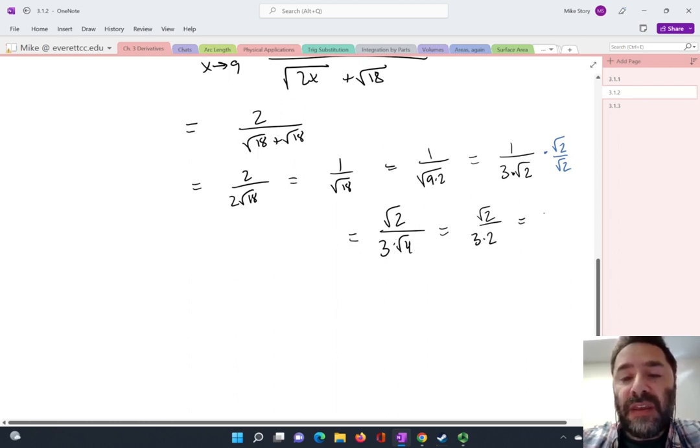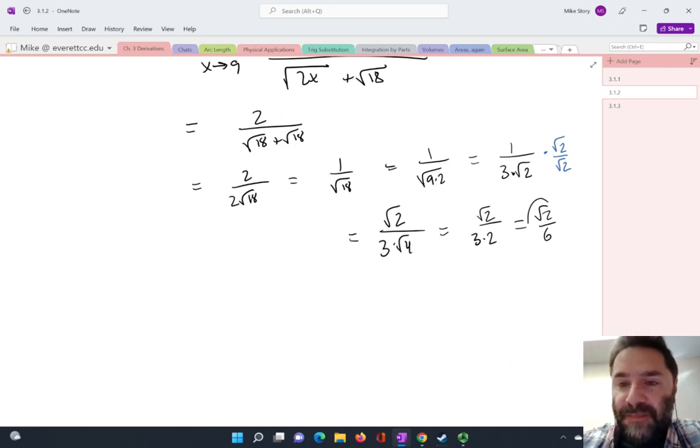And so you're going to end up with... Oh, wait. No, I'm done. I don't want to simplify that anymore. Oh, wait. Yes, I do. Square root of 2 over 6. Yeah. There we go. Okay. So there is me calculating the derivative using the one version of the definition of the derivative.